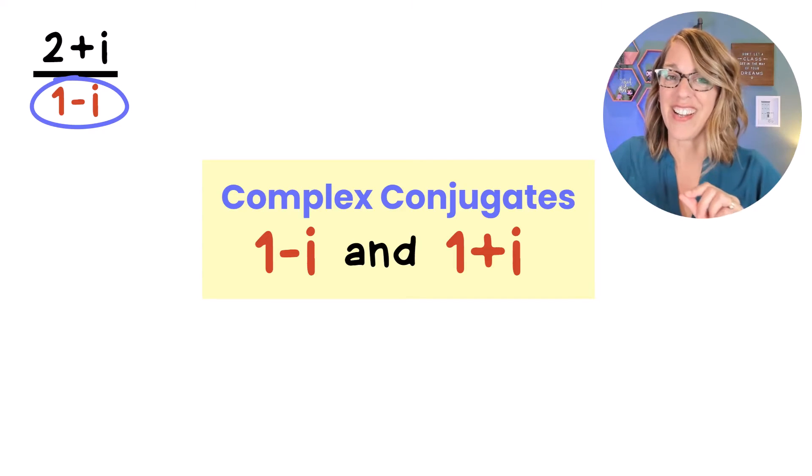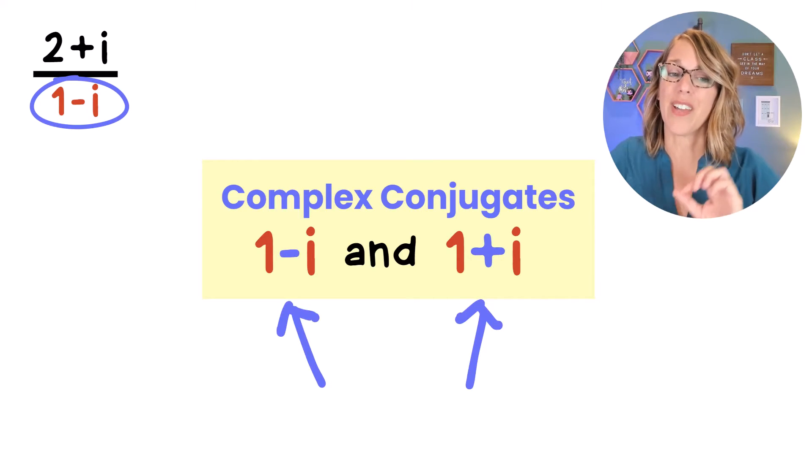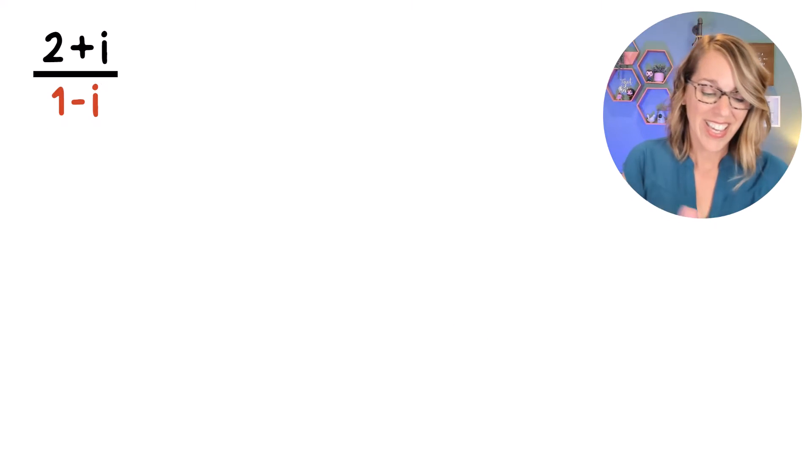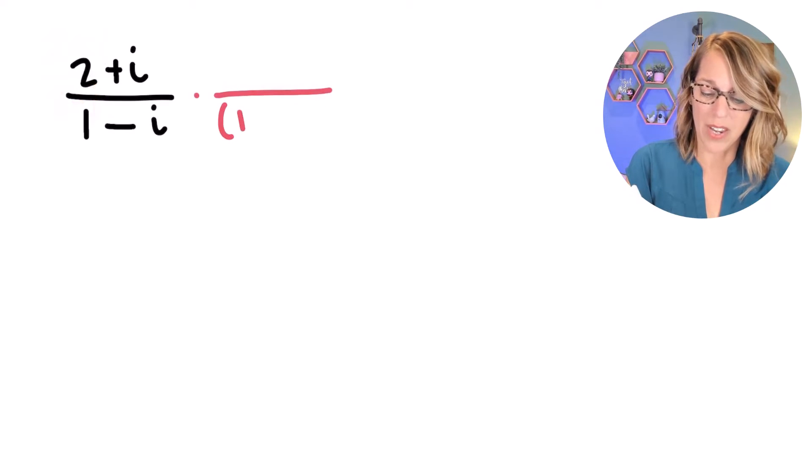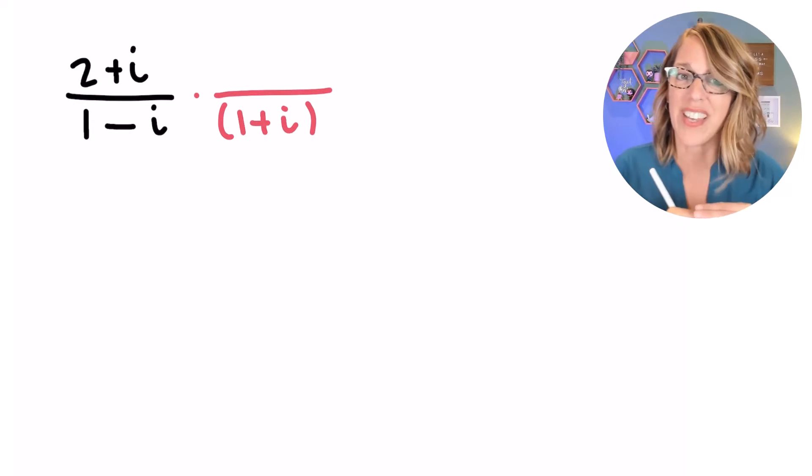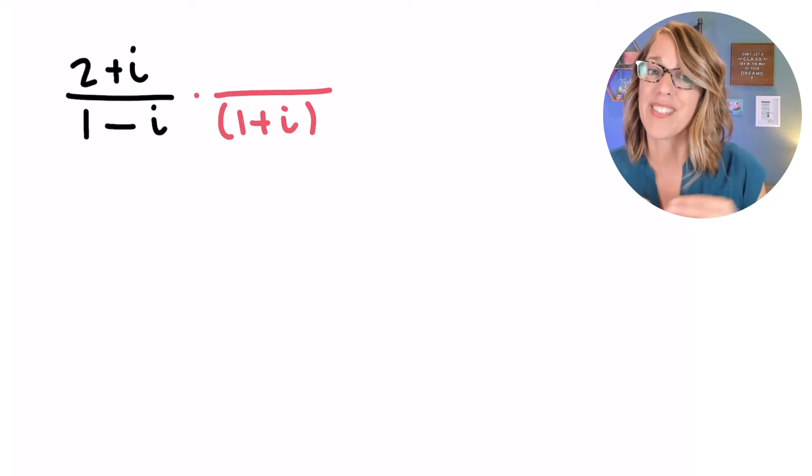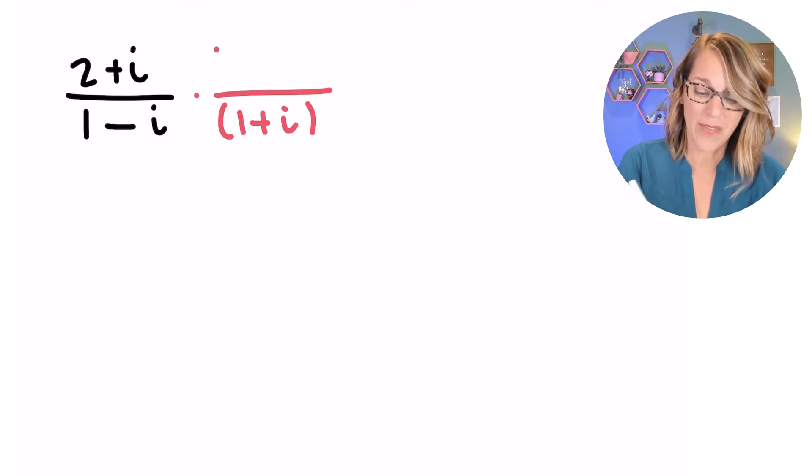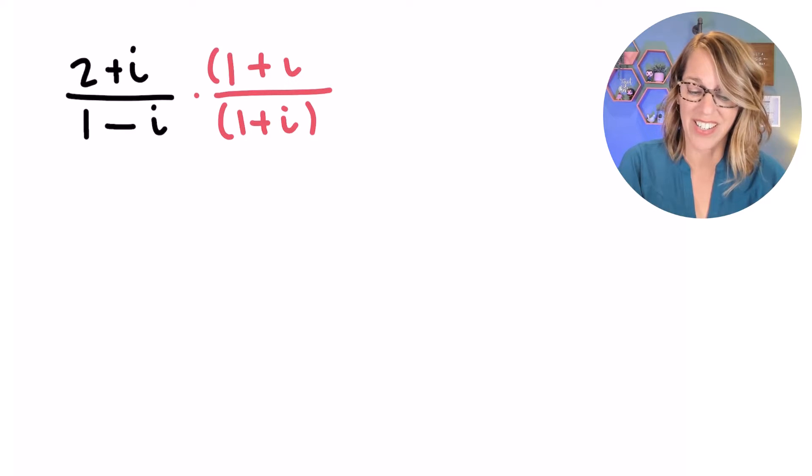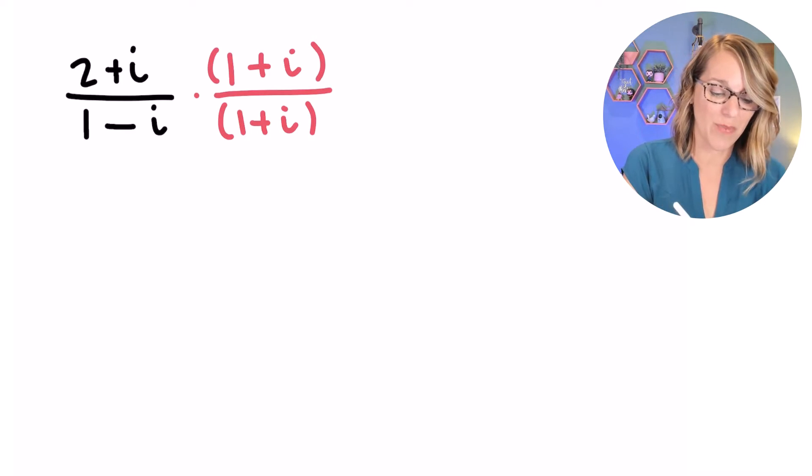The conjugate changes the sign on the imaginary part. Notice how I've got 1 minus I in the denominator. We're going to multiply by that 1 plus I. Here's what it looks like. I'm going to multiply that denominator by 1 plus I, and I'm doing that to create a difference of squares. My middle terms are going to drop out. But whatever I do to the denominator, I need to also do to my numerator.